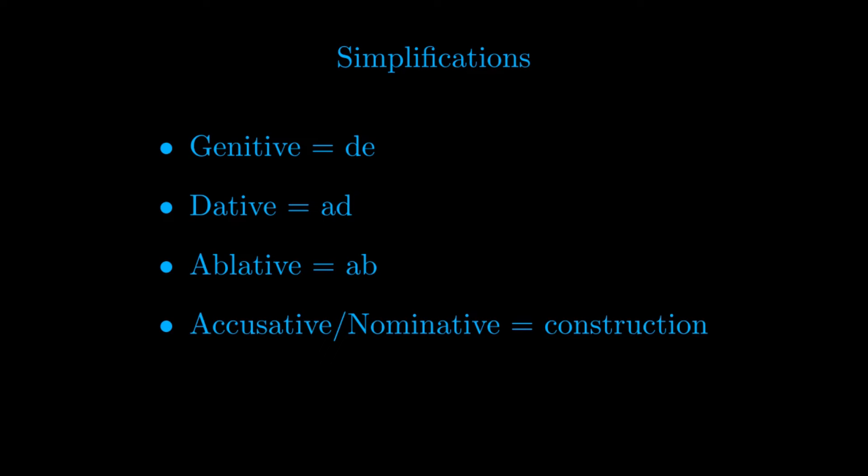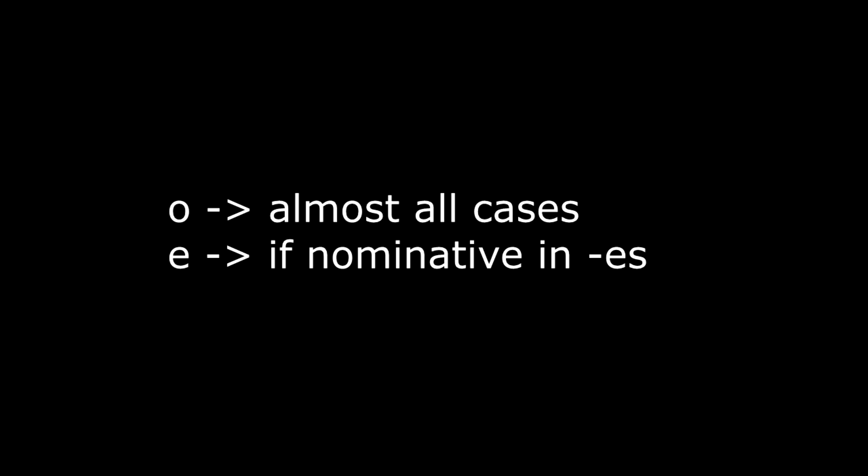Peano gives the following simplifications: Genitive will be indicated with the prefix de, the dative case will be indicated with ad, ablative will be indicated with ab, and accusative and nominative cases will be clear by the construction of the preposition, using series such as subject-verb-object or object-subject-verb. The endings of nouns thus become unique and become O in most cases, becoming E if the nominative of the classical Latin noun ends in S.